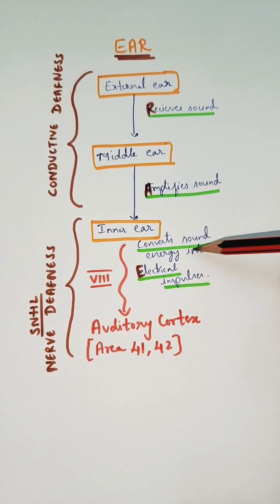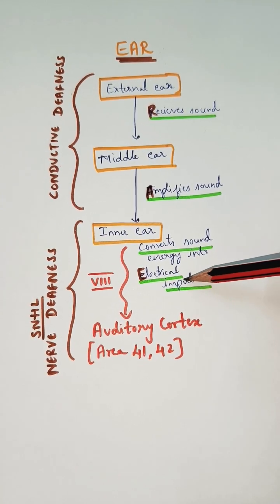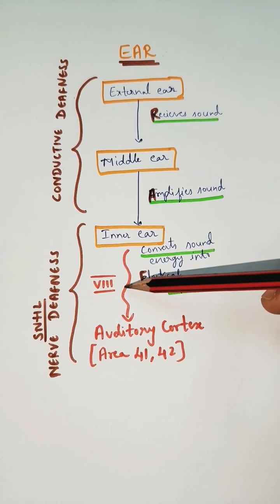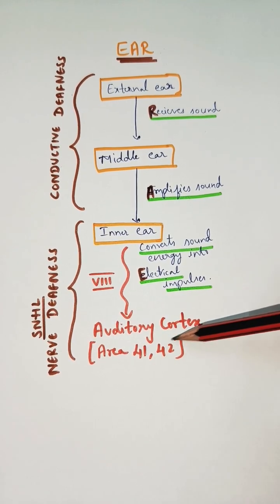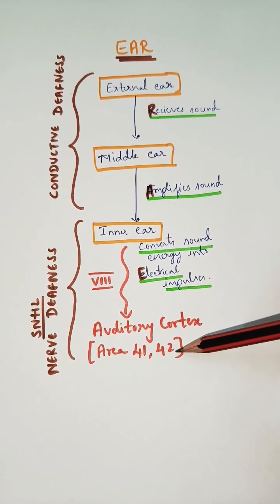The inner ear converts the sound energy into electrical impulses or action potentials, which are transmitted via the eighth cranial nerve to the auditory cortex, area number 41 and 42.